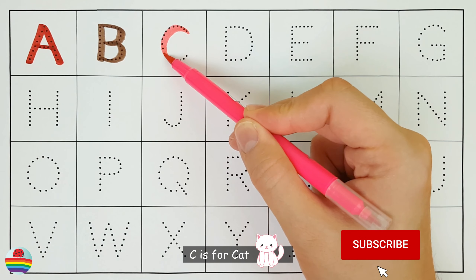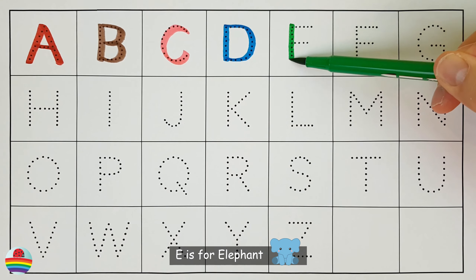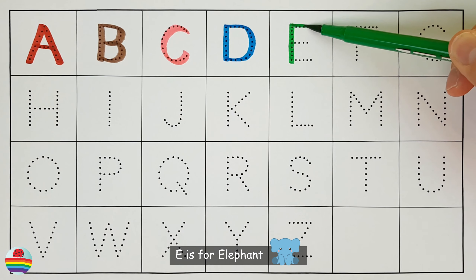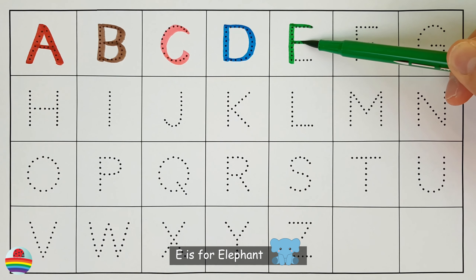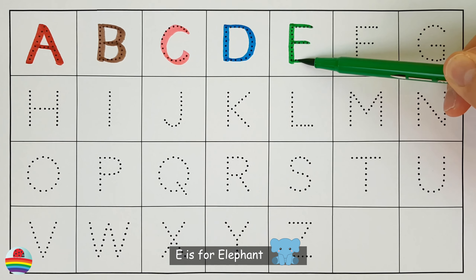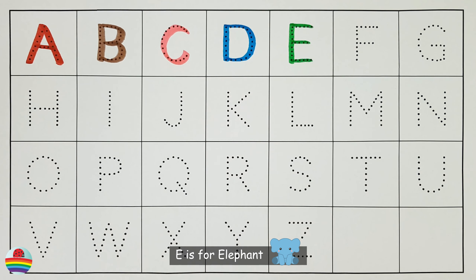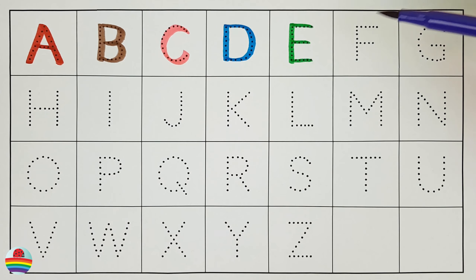C. C is for cat. C. D. D is for deer. D.